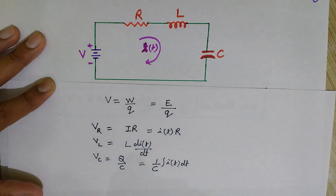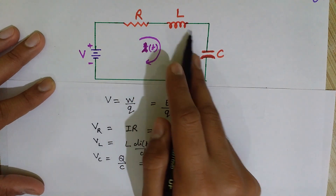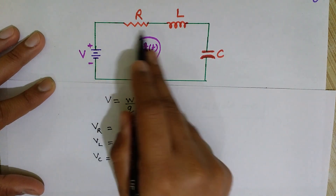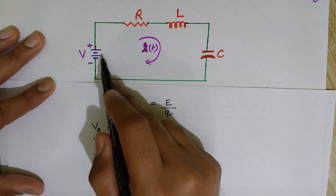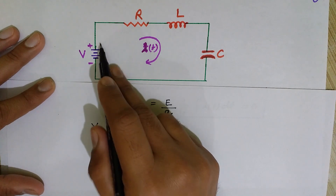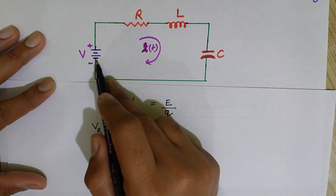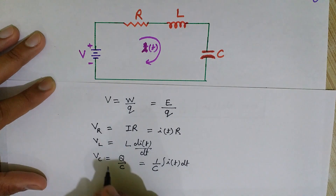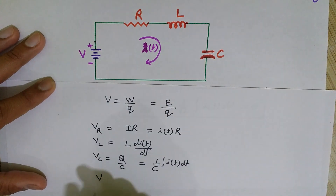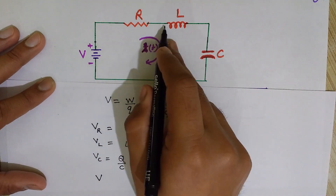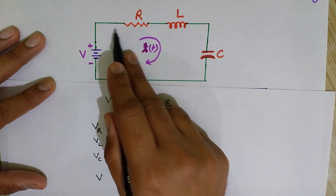To write the KVL equation, we move in the clockwise direction and add the voltages across each component. As we move clockwise, we calculate the voltage as final minus initial. Moving from one terminal of the battery to the other, the voltage increases by V volts, so the potential drop across it is V — that is, final minus initial equals positive V.